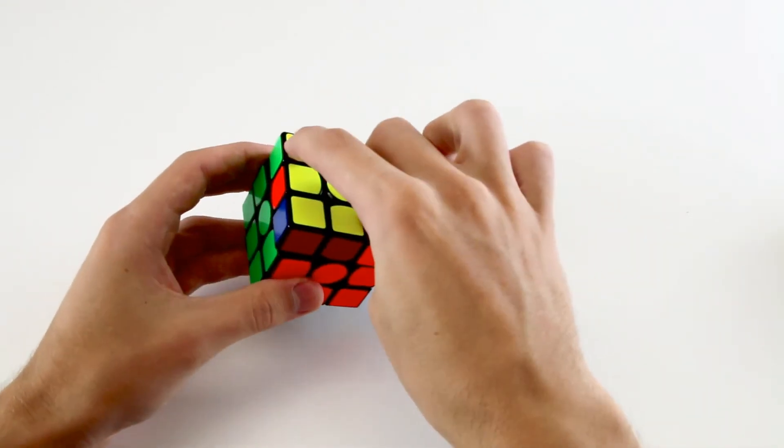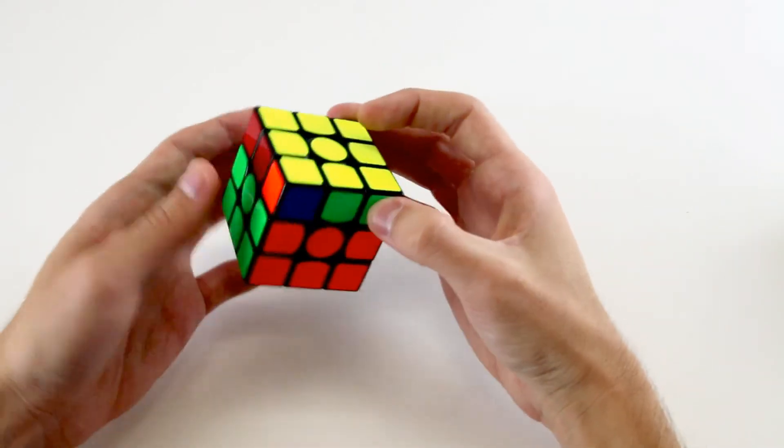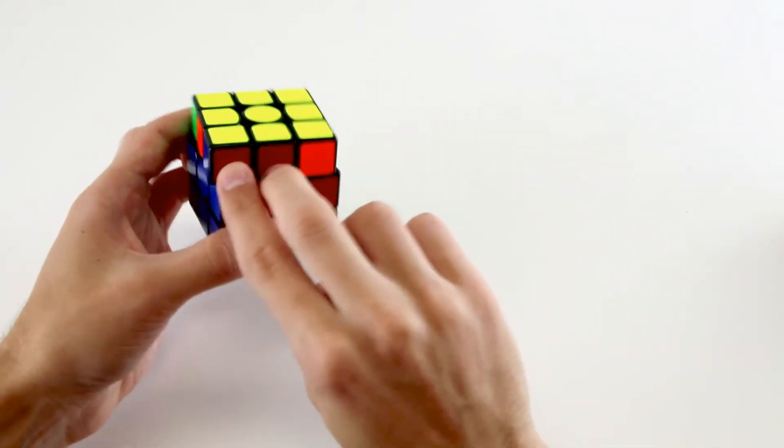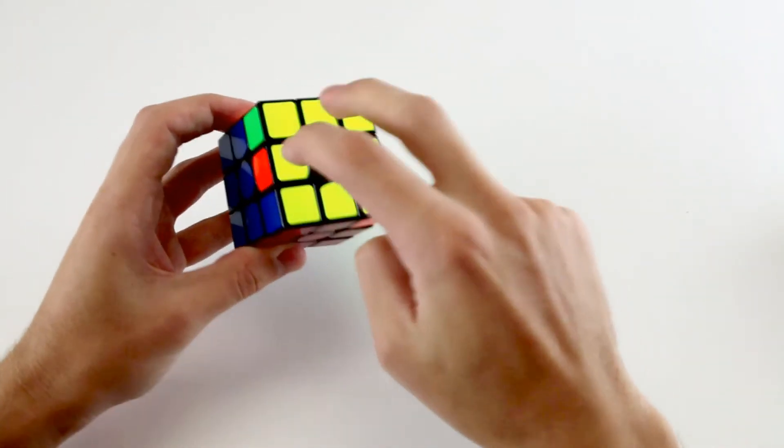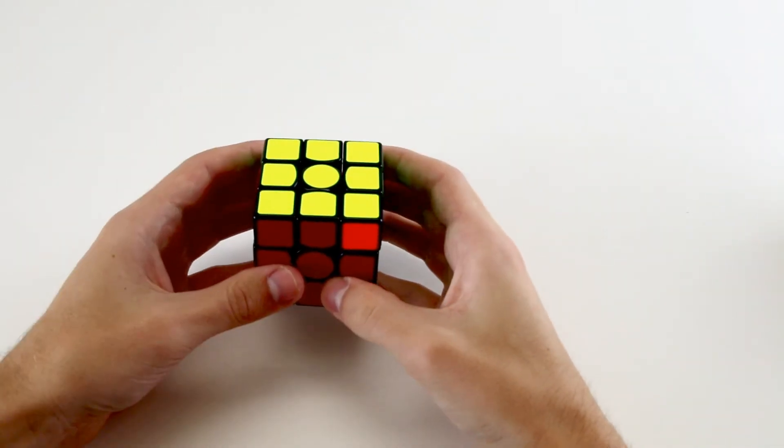For example, here we only have two pieces correctly solved, and we can do a U2 to make it four pieces correctly solved. We see that we have this diagonal swap and these two edges need to be swapped, and that's the case we recognize.